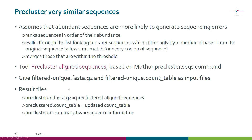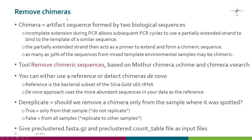As input you give the FASTA file and the count table from the previous step. As result files you get the pre-clustered aligned sequences, the matching count table, and the summary file. After that we remove chimeras.